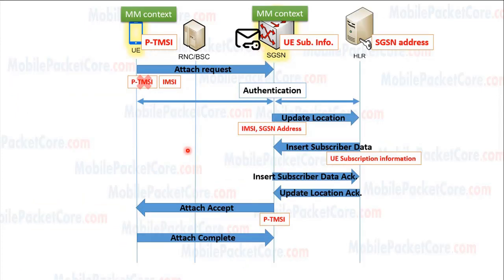In summary, after the attach procedure succeeds, the following should be accomplished: MM context is established on the UE and the SGSN. Authentication occurred between the SGSN and the UE. The UE received its PTEMC and stored it in its MM context. The SGSN retrieved the subscription information of the UE from the HLR. The HLR knows which SGSN is currently serving the UE.